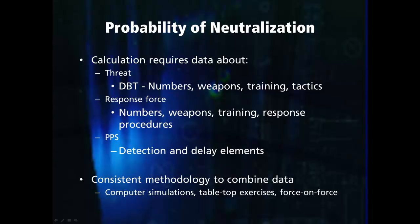Information about the threat includes the number of adversaries, the types of weapons they use, their level of training, and their tactics, which can include stealth, diversions, or multiple simultaneous attacks. What an adversary will actually bring to an attack cannot be determined with certainty, so the neutralization probability will need to be calculated for a variety of weapons and tactics to determine the worst case scenario for the response force.